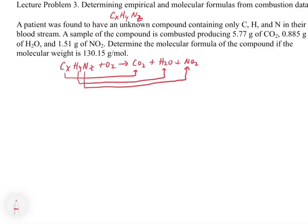So the fact that we have masses of each one of these products—5.77 grams, 0.855 grams, and 1.51 grams—that's really important, because built into those masses is the mass of each individual element: carbon, hydrogen, and nitrogen.